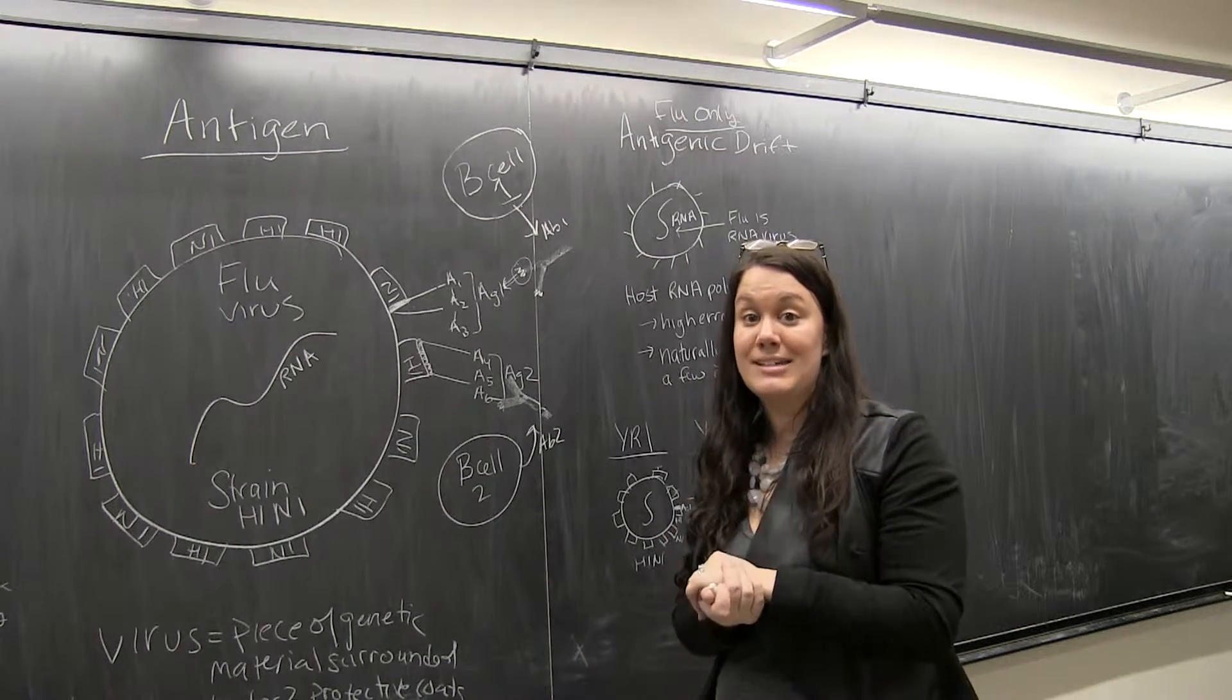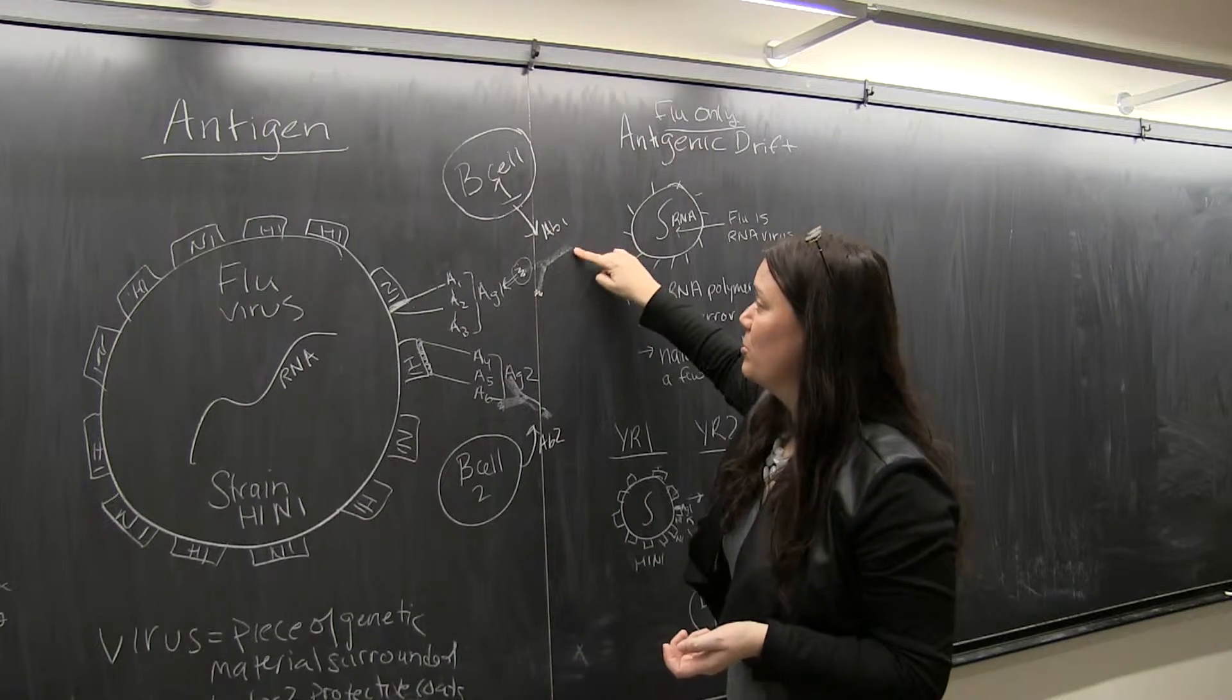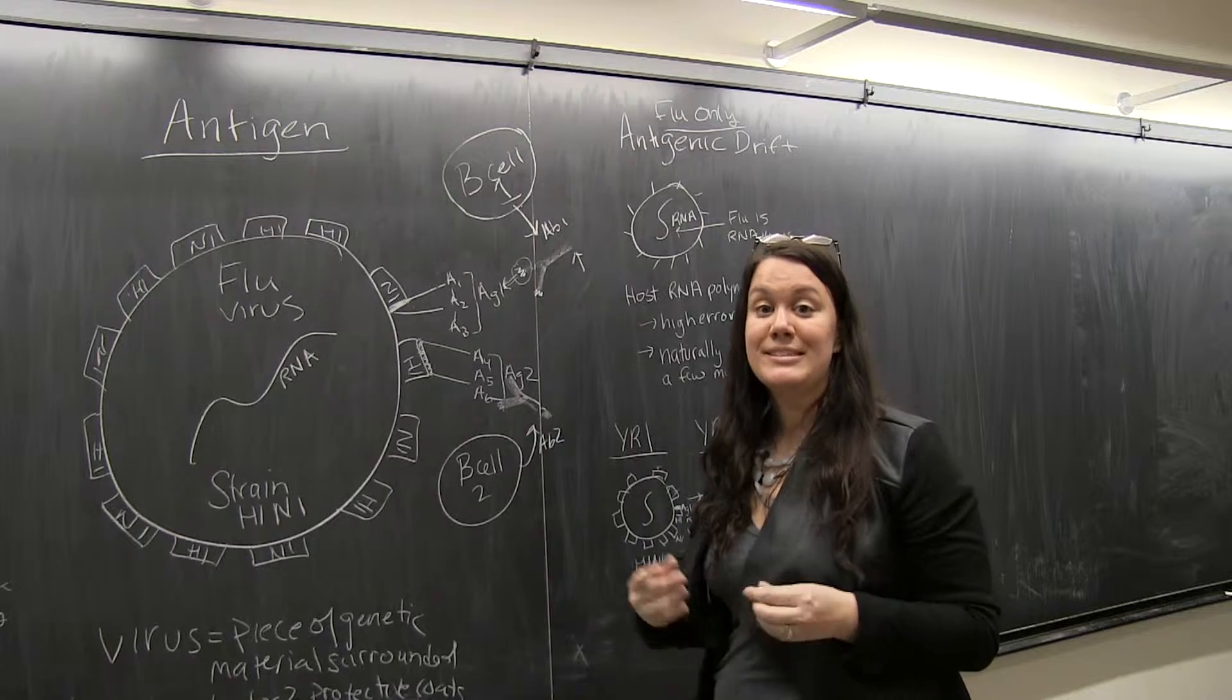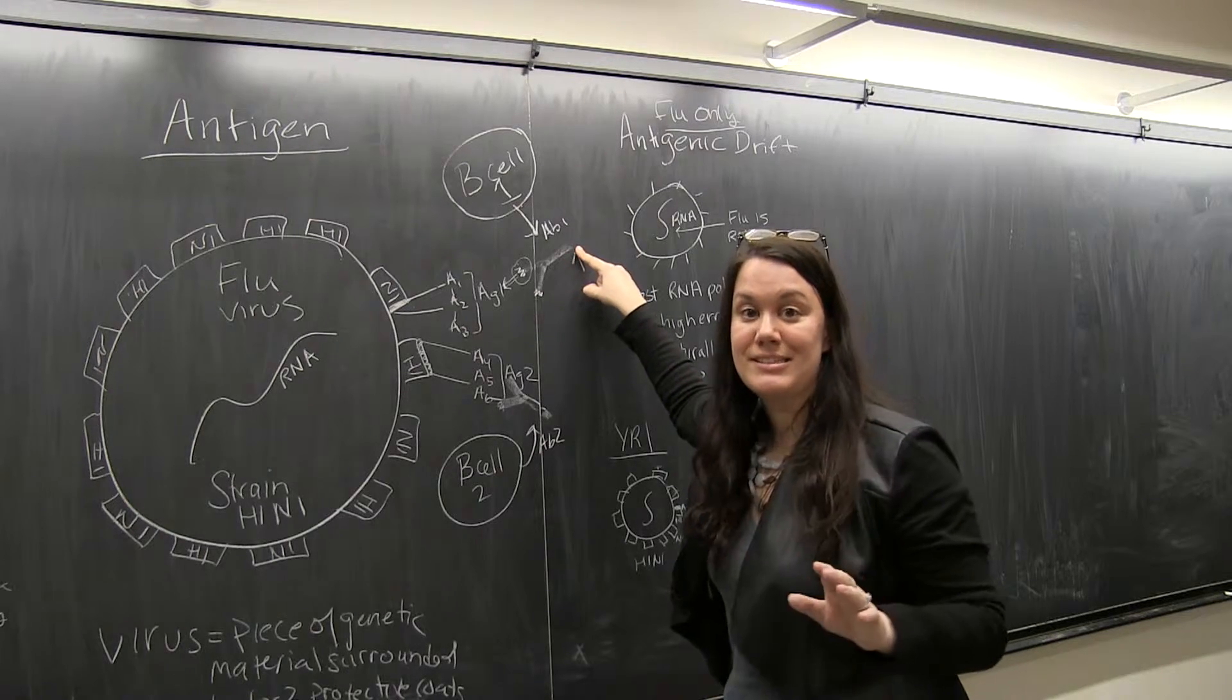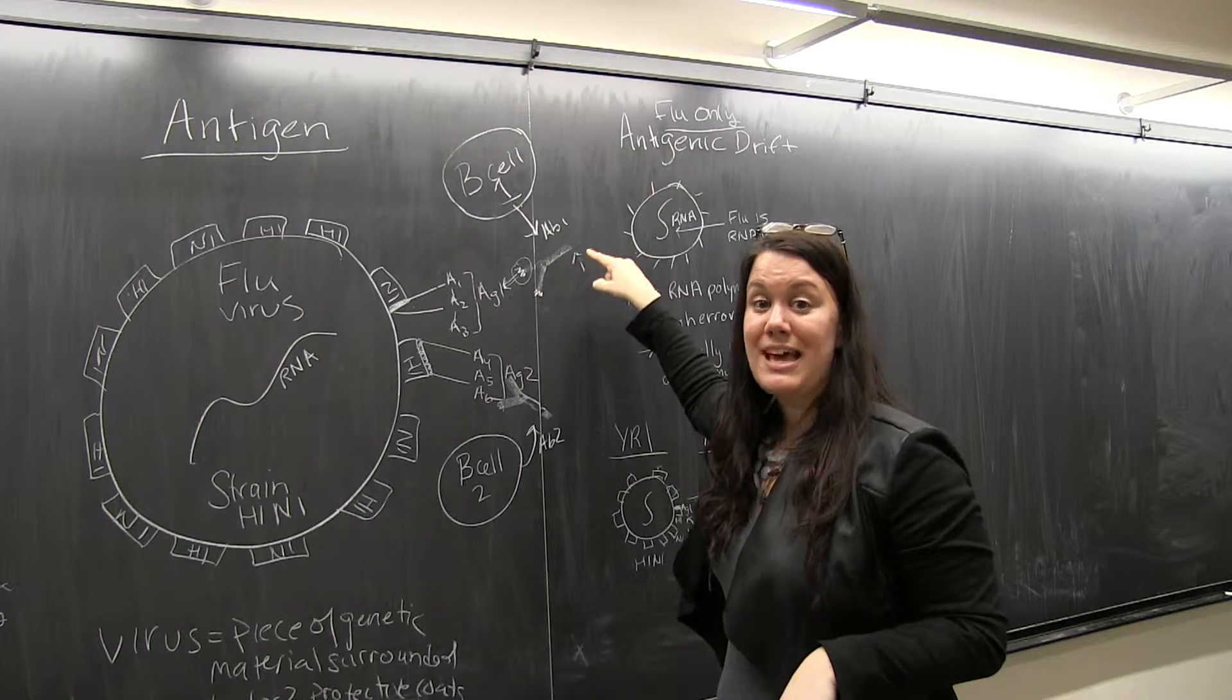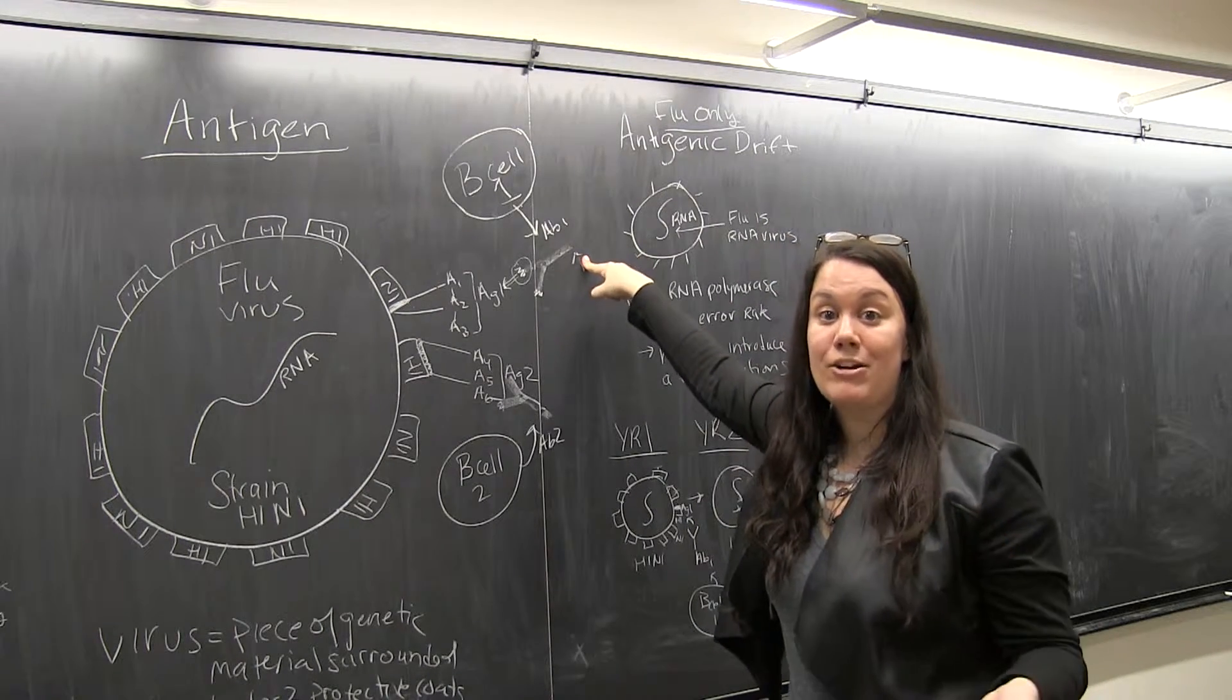And then what happens after that? Well, this other end, the non-forked end, is actually constant. So for all the different kinds of antibodies, this sequence back here is going to be the same no matter what antibody you have. This constant region is recognized by cells like macrophages.